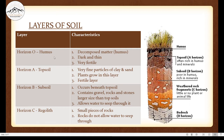Horizon O is humus. Humus means decomposed matter such as plant and animal remains. When plants and animals die, they decompose on the surface, and this decomposed matter is actually a very good fertilizer, known as humus. Horizon O has a lot of decomposed matter. It is dark and thin, and as you can see in this picture, it is very thin compared to all the other layers, and it is very fertile.